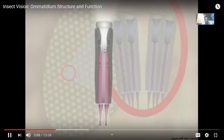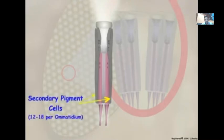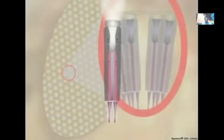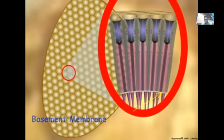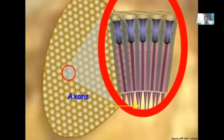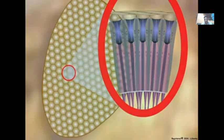Retinula cells are surrounded by 12 to 18 secondary pigment cells so that each ommatidium can be functionally isolated from its neighbors. Ommatidia sit on a basement membrane in the retina and axons from the retinula cells combine below the membrane to form the optic nerve that leads to the protocerebrum of the insect brain. Let us see how insect compound eyes function to detect light and perceive visual information.